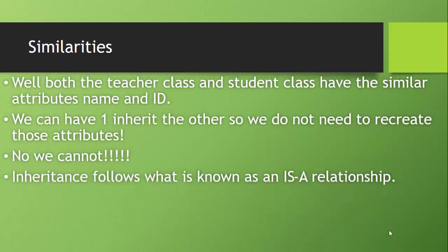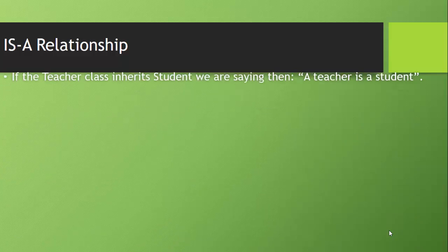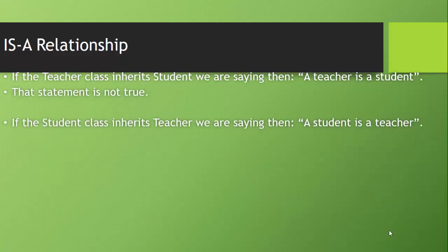Inheritance follows what is known as an is-a relationship. So if the teacher class inherits student, we are then saying a teacher is a student. That statement is not true. If the student class inherits teacher, we are saying a student is a teacher. That statement is not true.